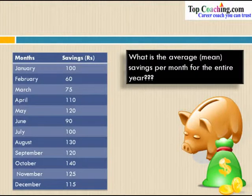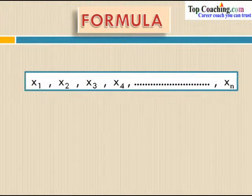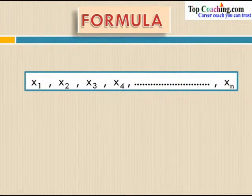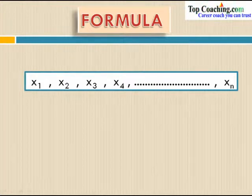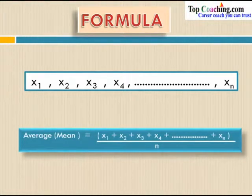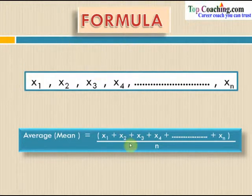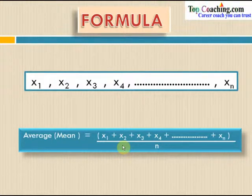To answer all these questions, let's look at the formula for finding the average of a group of data. If we have N elements x1, x2, x3, x4 and so on up to xN, then the formula to calculate the mean is: Average = (x1 + x2 + x3 + ... + xN) / N. That is, average is the sum of all the entries divided by the number of entries.